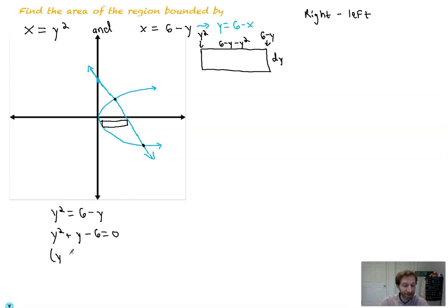And then from there, we factor. So we've got y and y and the numbers that multiply to negative 6 that add to 1 plus 3 minus 2 set equal to 0.